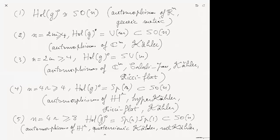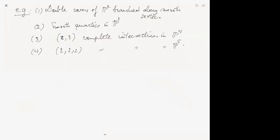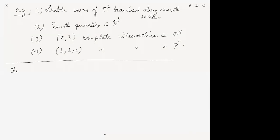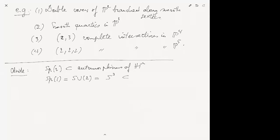Let me go to a new page to explain this. So Sp(r) is contained in the automorphisms of H^r — these are basically the r×r matrices with entries in the quaternions that commute with a given Hermitian quaternion matrix. And Sp(1) can also be identified with SU(2), and also S³. This naturally lives inside H itself — it's the group of unit length quaternions.